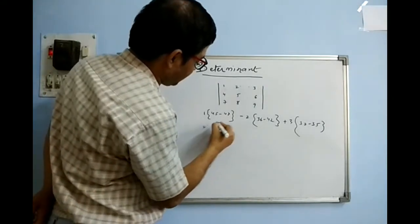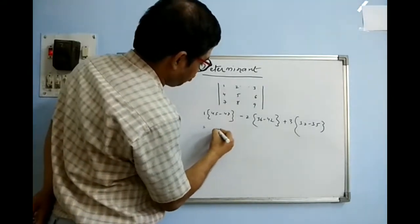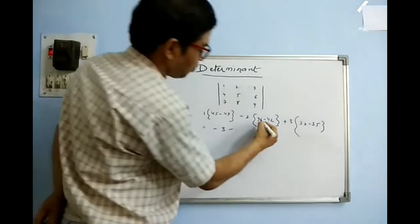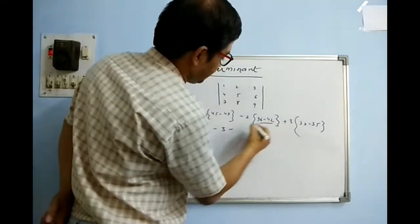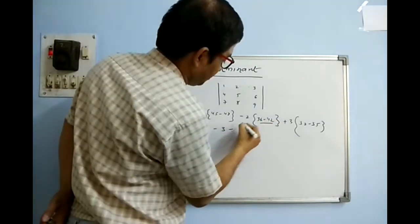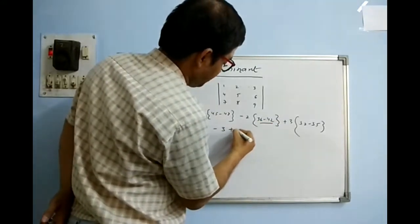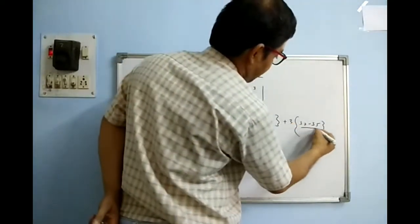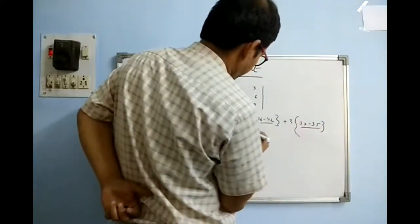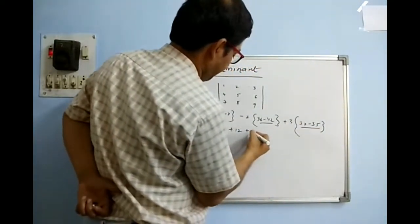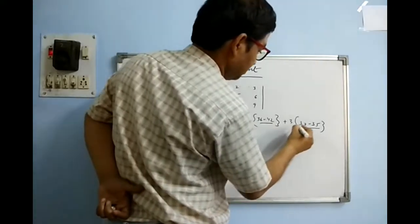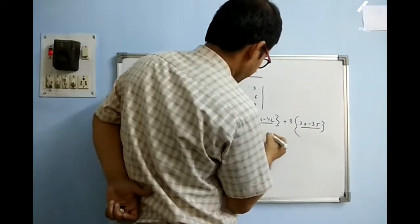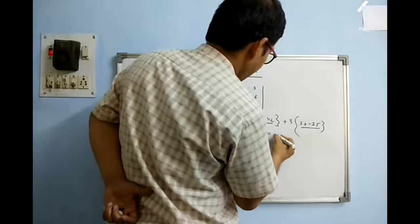So the value is coming out to be: minus 3, minus (minus 6 into 2 plus 12), and this is (minus 3 into 3 plus 9), which is minus 9. Because of minus 3, it is coming out to be 0.